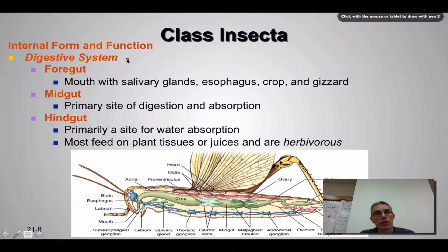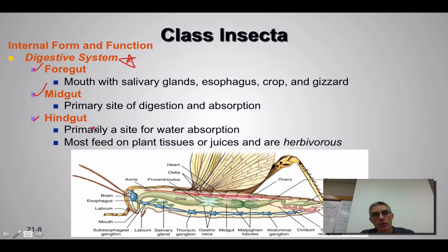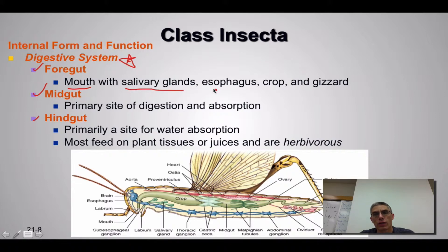When you look at the digestive system of these animals, you'll notice they have a foregut, a midgut, and a hindgut. That's an easy way to think about the positioning of their digestive system. The foregut takes into account the mouth, and in that mouth you're going to have salivary glands, the esophagus, the crop, and the gizzard.